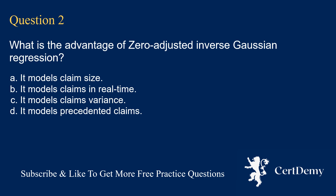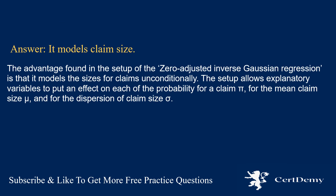Question 2. What is the advantage of zero-adjusted inverse Gaussian regression? Options: it models claim size; it models claims in real time; it models claims variance; it models precedented claims. The answer is: it models claim size.